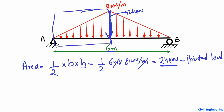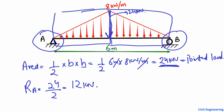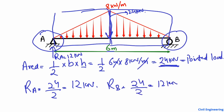Since the load is symmetric, we simply divide the total load by 2. Half of the load will be transferred to support A and half to support B. So RA equals 24 divided by 2, which is 12 kilonewtons. Similarly, RB is also equal to 12 kilonewtons.